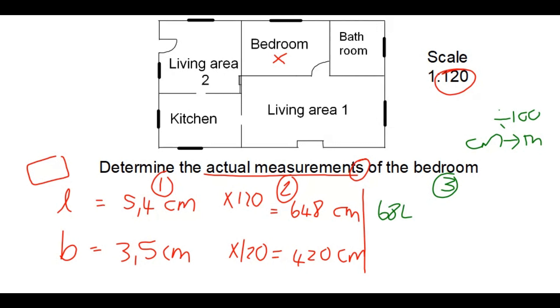And in this case, it will be divided by 100. So we're going to say 6.84 centimeters divide by 100, which will give you 6.84 meters. And 420 centimeters divide by 100, which will give you 4.2 or 4.20 meters.